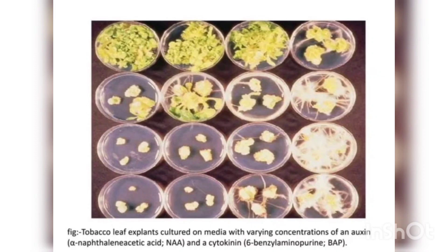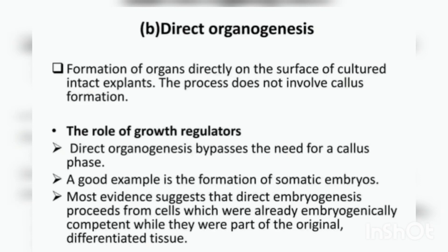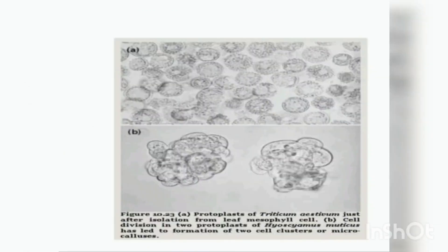Here we have shown the tapioca leaf explant culture in varying concentrations of auxin and cytokinin, demonstrating different organ development. In direct organogenesis, the formation of organs occurs directly on the surface of the cultured intact explant, and this process does not involve callus formation. Direct organogenesis bypasses the need for a callus phase — an example is somatic embryos. Most evidence suggests that direct embryogenesis proceeds from cells that were already embryologically competent while they were part of the original differentiated tissue.